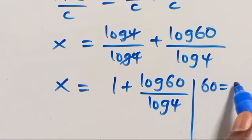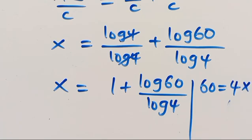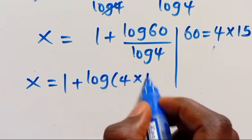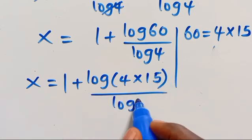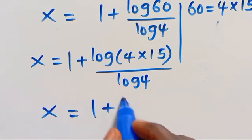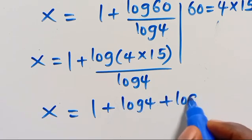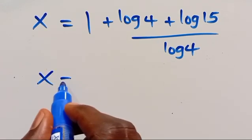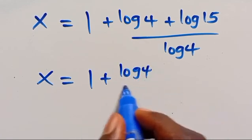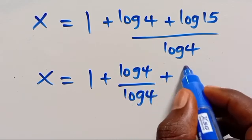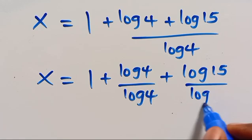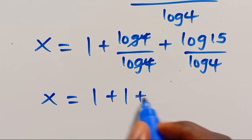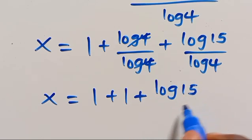We can also write 60 as the product of 4 times 15, so here X equals 1 plus log of 4 times 15 divided by log 4. This gives X equals 1 plus log 4 plus log 15 divided by log 4. So from here, log 4 over log 4 is 1, giving X equals 1 plus 1 plus log 15 divided by log 4.